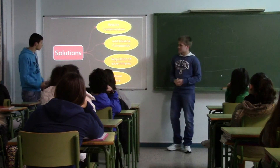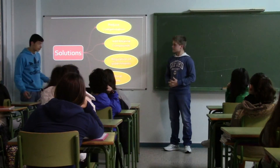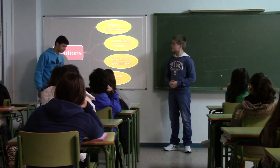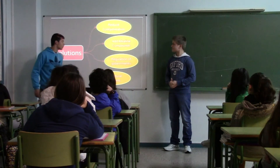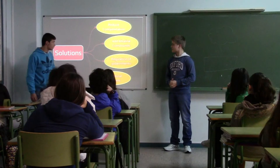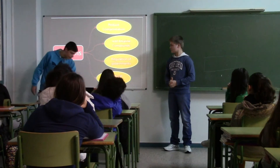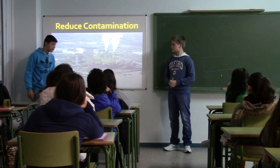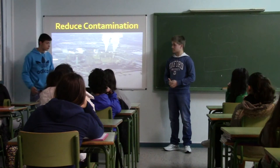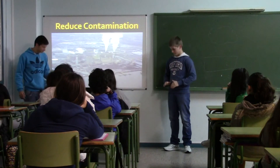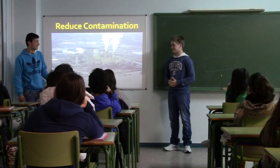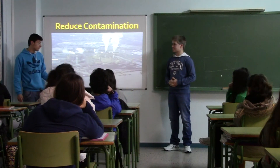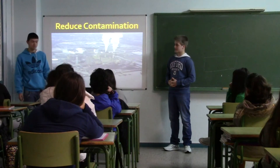Now we are going to see the solutions for the acid rain problem. One solution is to reduce contamination — you can reduce contamination by using public transport, which will make you not release as many harmful gases.